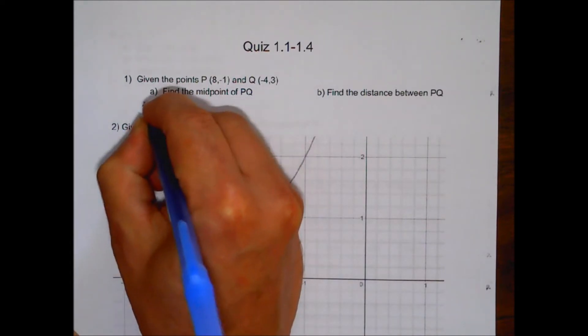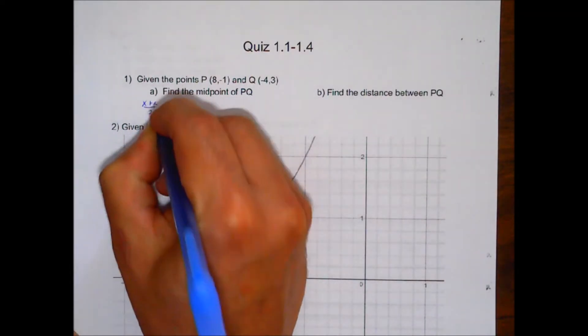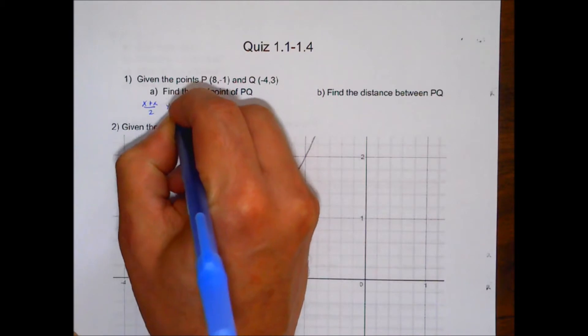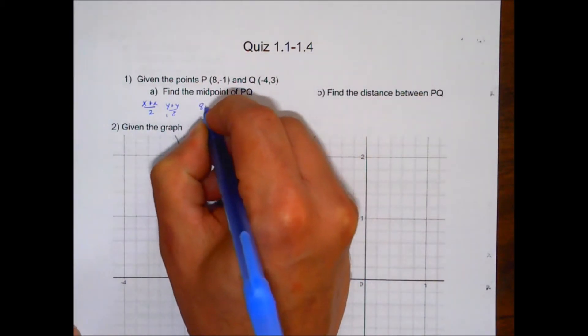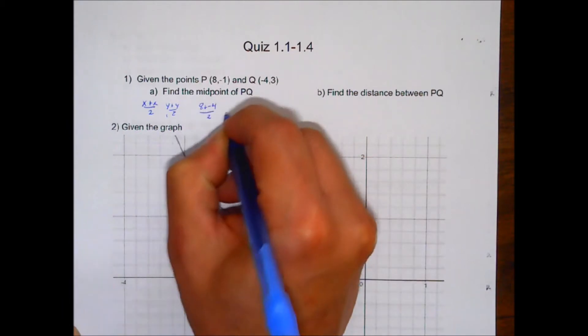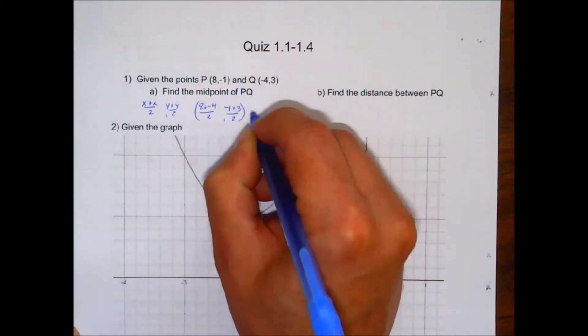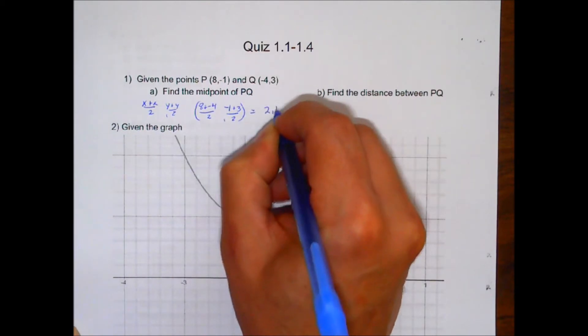Midpoint formula is x plus x over 2, and then y plus y over 2. So when you plug these in there, you have 8 plus negative 4 divided by 2, negative 1 plus 3 divided by 2, and working those out gives you the point 2, 1.